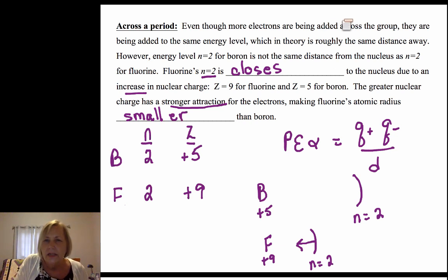That's why when I did this, it increases from right to left. These are smaller due to an increase in nuclear charge compared to the ones to the left of them.